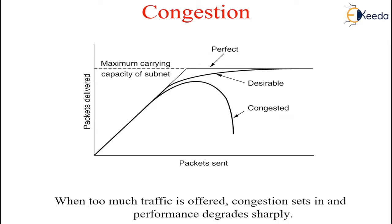When the number of packets dumped into the subnet by the host is within the carrying capacity of the subnet, they are all delivered and the number delivered is proportional to the number sent. However, as traffic increases, the routers are no longer able to cope with increased traffic and they begin to lose packets. At very high traffic, performance collapses completely and almost no packets are delivered.